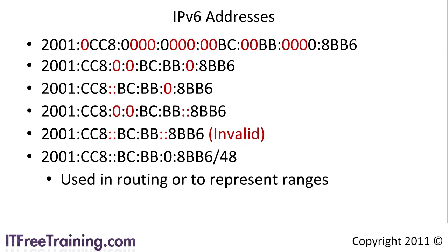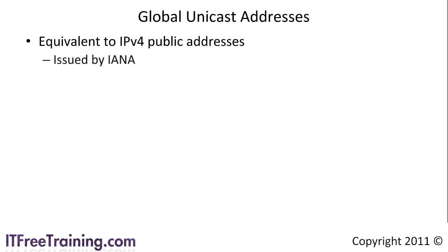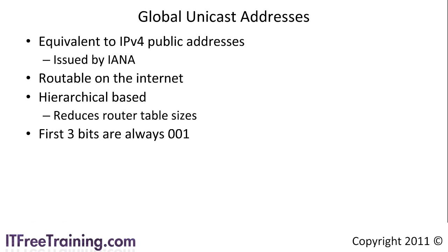Once you get your head around the syntax of IP version 6 addresses, they do become less confusing. The first type of address that IP version 6 offers is the global unicast address. These are equivalent to IP version 4 public addresses and are used by the internet assigned numbers authority, so you are guaranteed the address will be unique and routable on the internet. Global unicast addresses are hierarchically based, thus greatly reducing the route tables on internet backbone routers — one of the goals of IP version 6. You can tell a global unicast address as the address always starts with the bits 001, or in other words, they always start with a value between 2000 and 3FF.